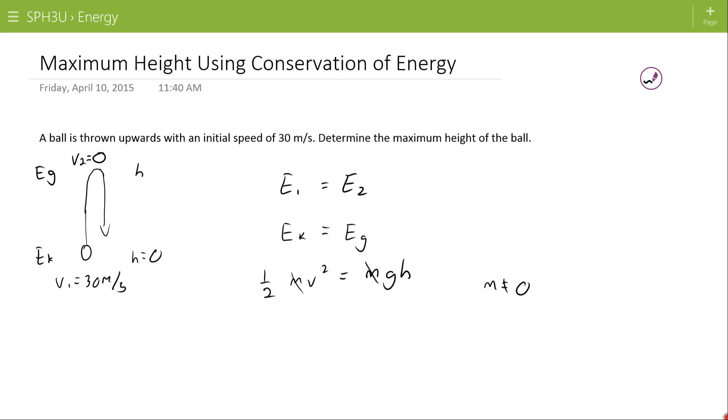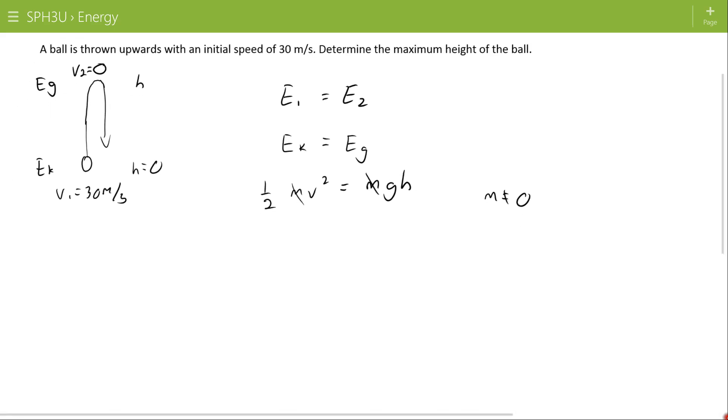And then I can just put my numbers in. One half, 30 meters per second squared, is equal to 9.8 meters per second squared times the height. So 460 divided by 9.8 is equal to 9.8 meters per second squared times h.